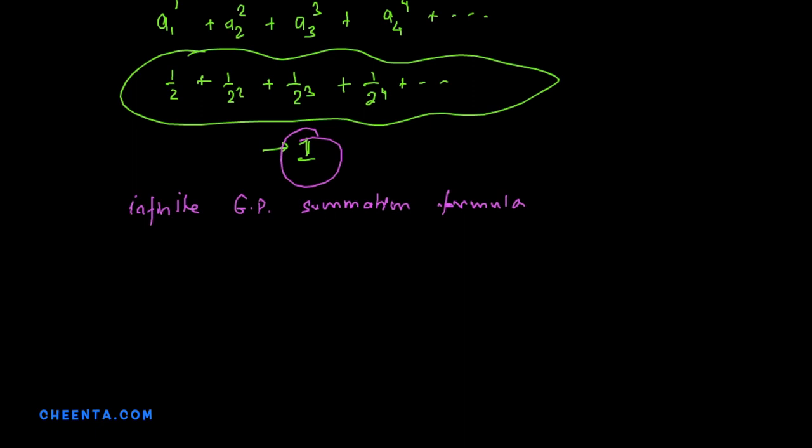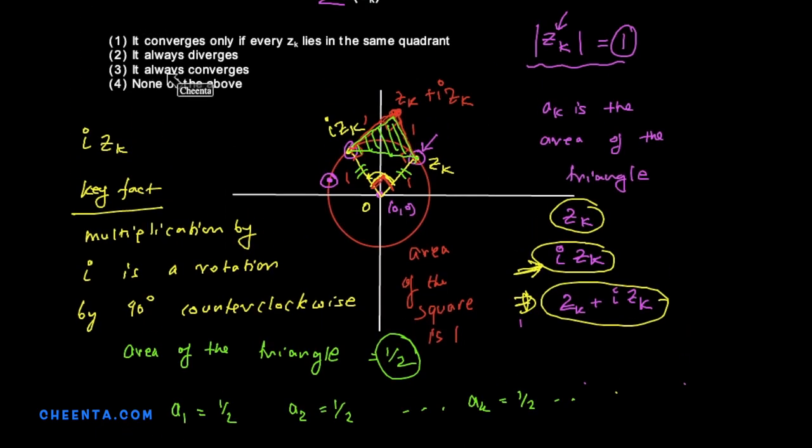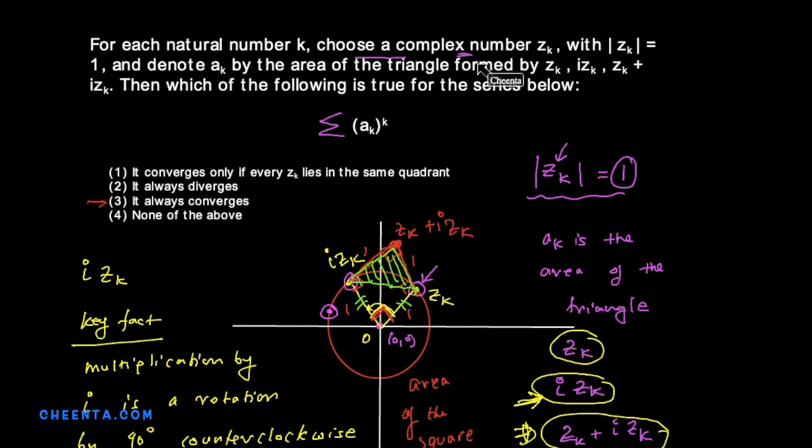So definitely this third option is true. It always converges. Notice that we did not really use any x plus i y kind of complicated stuff. We just used the geometry of complex numbers. And that's really how you should approach this kind of problems. Complex numbers are designed to handle rotation and dilation. These are very important geometric transformations. Look into the link in the description or go to chinta.com to learn more about exciting mathematics. We will see you in the next video. Thank you for watching.